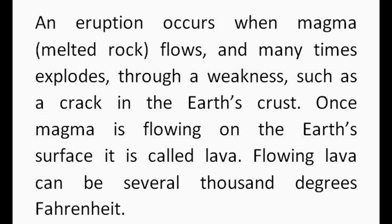Eruption occurs when magma — melted rock — flows and many times explodes through a weakness such as a crack in the Earth's crust. Once magma is flowing on the Earth's surface, it is called lava. Flowing lava can be several thousand degrees Fahrenheit.